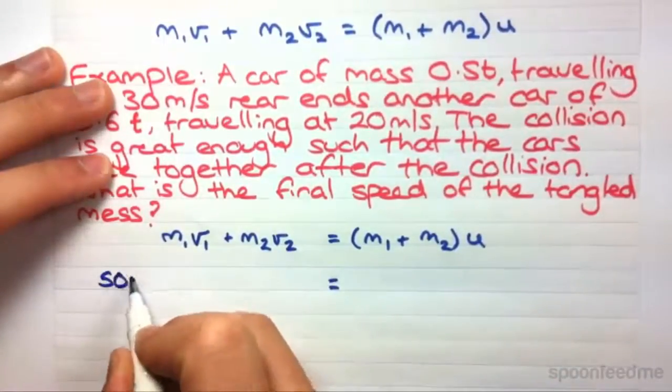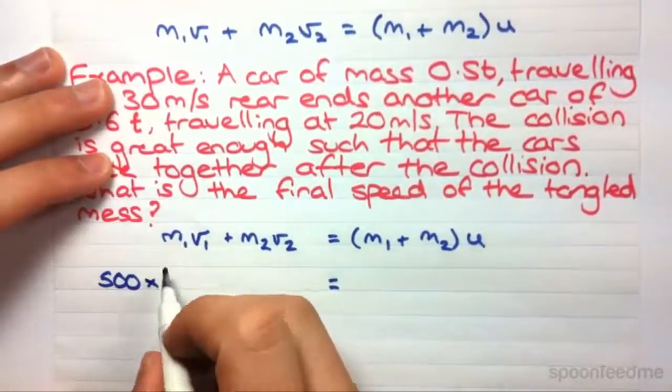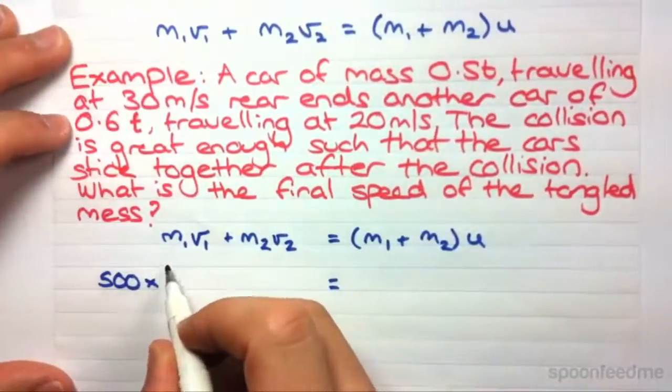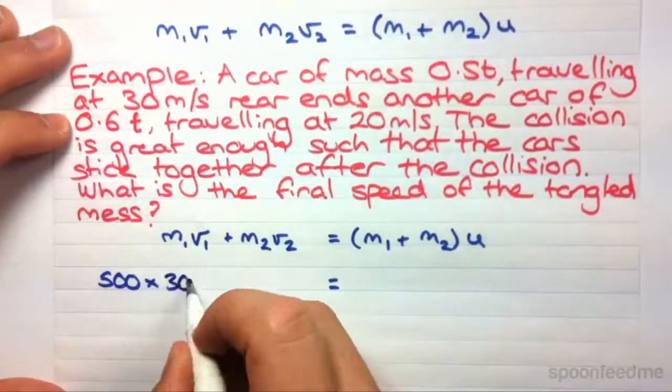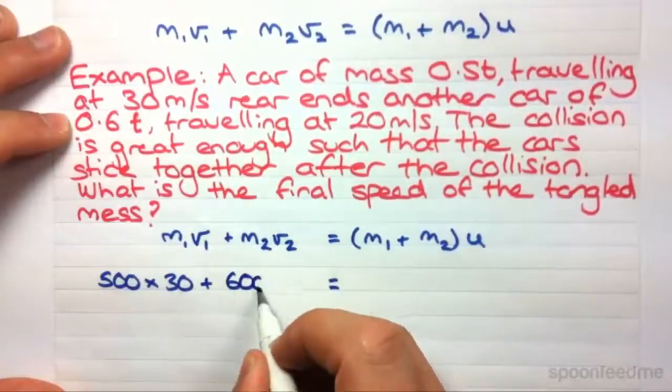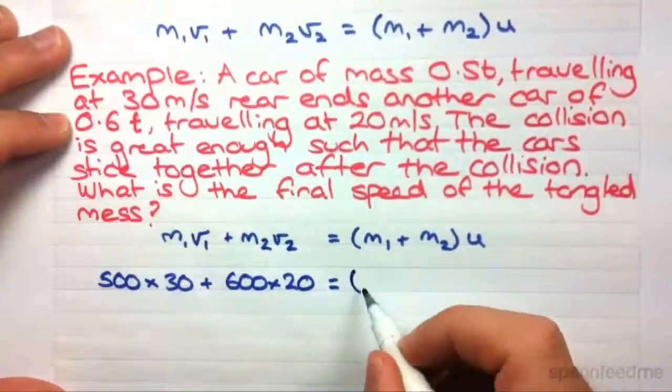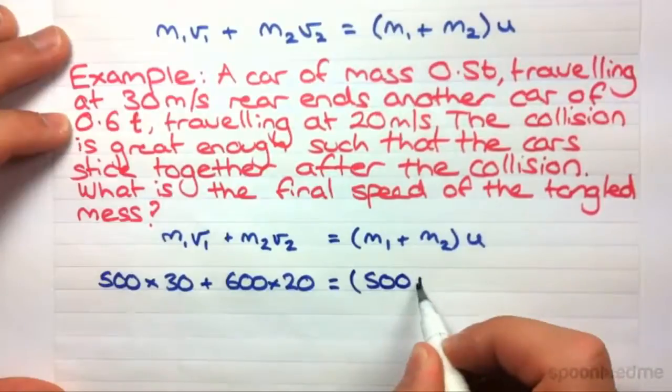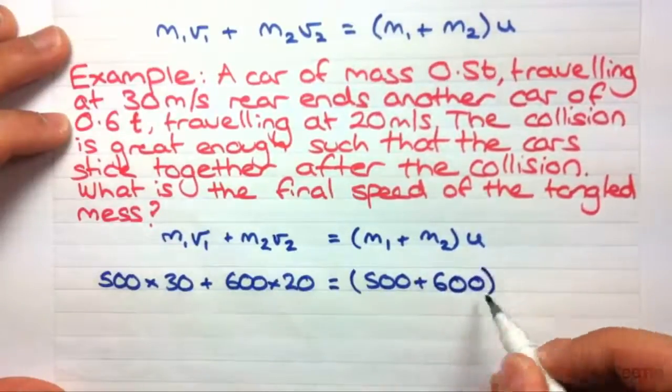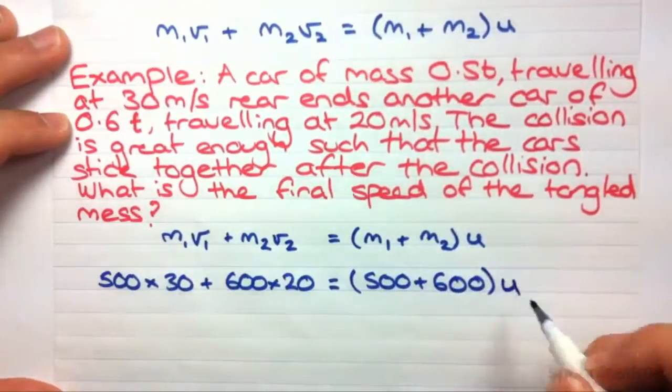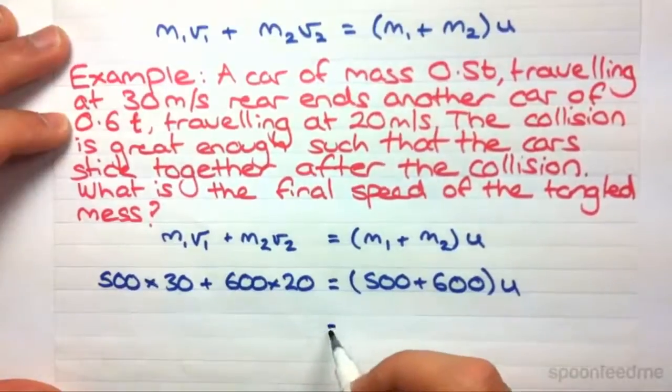So M1: 500 kilograms, we change tons to kilograms because that's the standard unit, times 30, plus 600 times 20 meters per second equals 500 plus 600, that's the mass of the tangled mess, times U which we don't know yet.